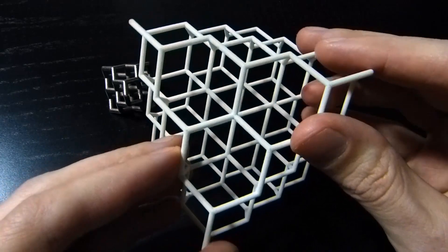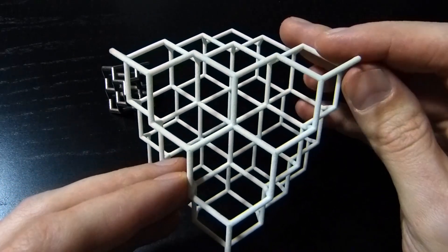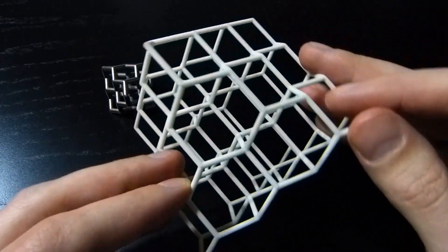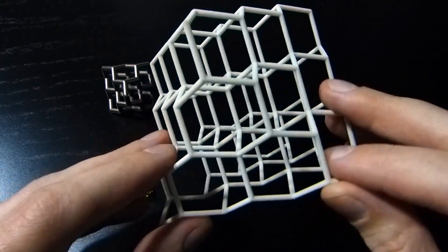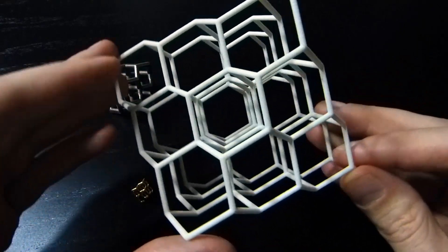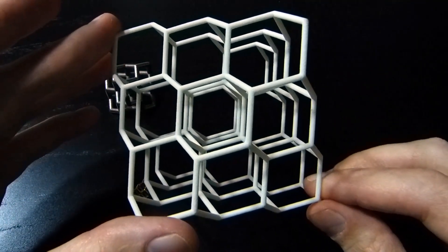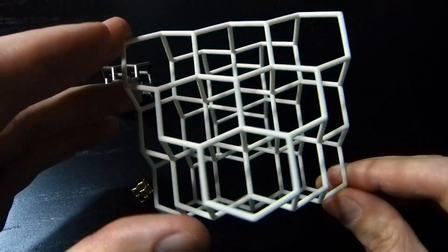It has beautiful symmetries. There's a three-fold rotational symmetry axis here and a two-fold rotational symmetry axis here, and you also get these long, irregular hexagonal tunnels that go through the structure.